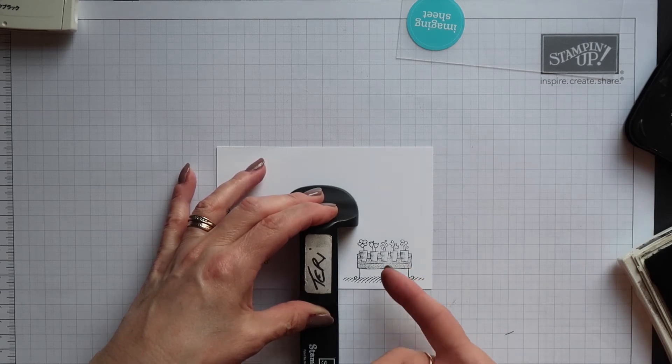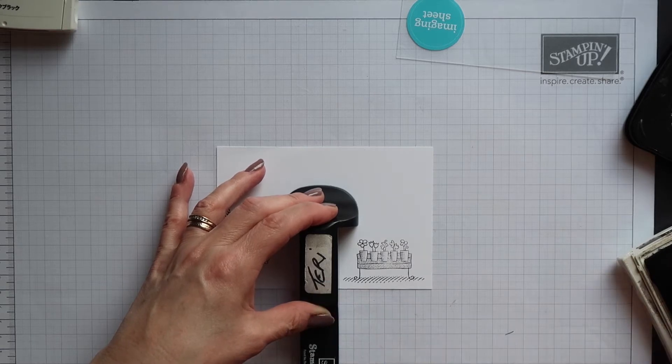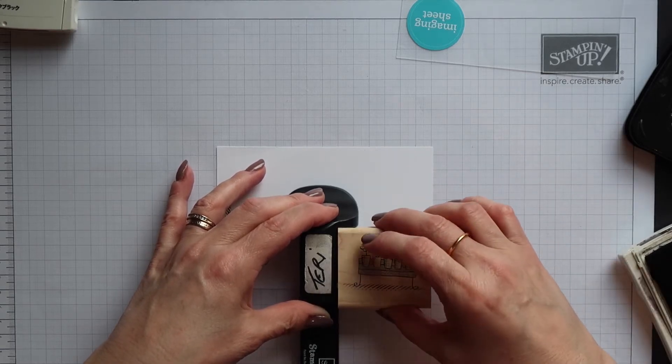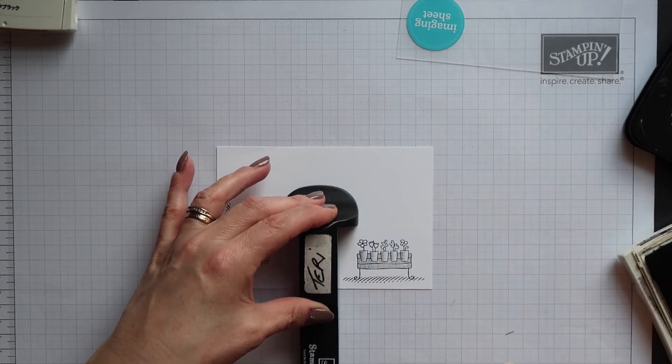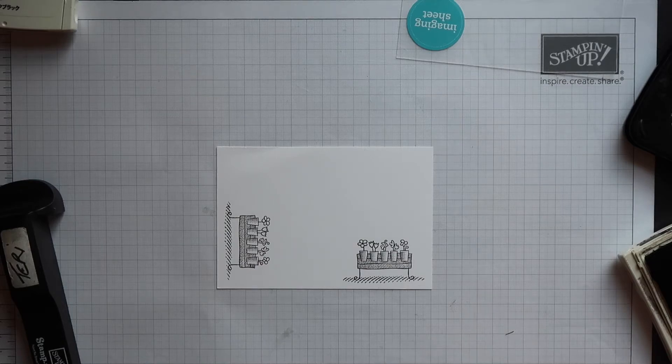Now this time as you can see I didn't get a clean impression. I missed some of the middle of the stamp so as long as you don't move that t-bar handle you can ink up your stamp and you can go again so you can double stamp or even triple stamp if necessary.